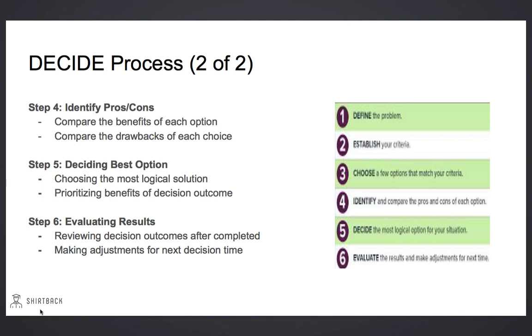The final step, Step 6, is Evaluating the Results. We should review our decision outcomes after they're done — that will allow us to make adjustments for the next time we may encounter the same decision.